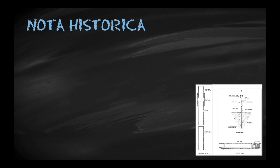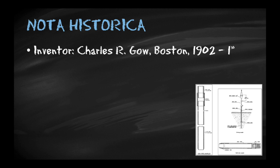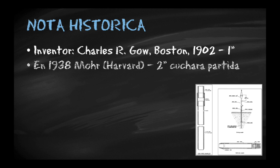Vamos a hacer una pequeña nota histórica. Aquí a mano derecha tenemos el Go Pipe Sampler, que fue el primero que se hizo, y un esquema publicado en la Sociedad Geotécnica de Boston, donde el Colegio de Ingenieros Civiles publicó esto en los años 30. El inventor de este aparato fue Charles R. Go en Boston en 1902. Él utilizaba una toma muestras de una pulgada y estandarizó el proceso. Era un militar con una compañía constructora que lo usaba para estudios de suelos. En 1938, Moore, un estudiante de Harvard y alumno del profesor Casagrande, también empleado de la empresa de Go, hizo la primera cuchara partida y estandarizó el test por primera vez.